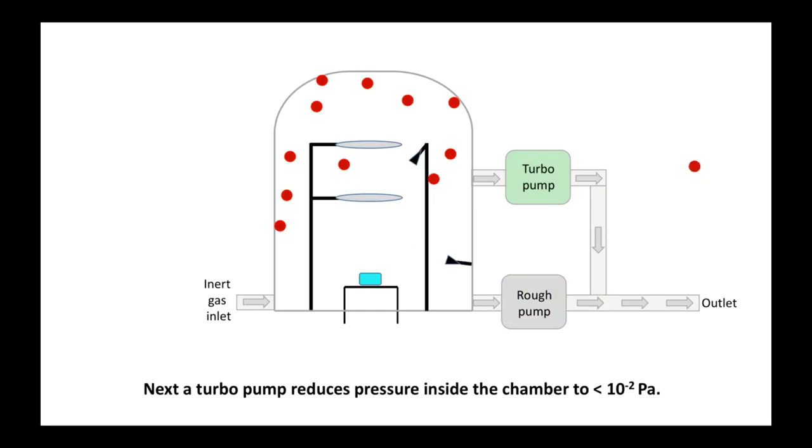Next, a turbo pump reduces pressure inside the chamber to less than 10 to the power of negative 2 pascal to create a vacuum light situation in the chamber.